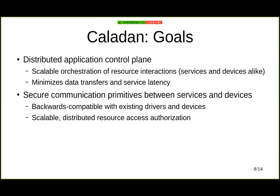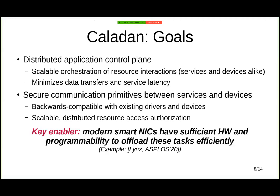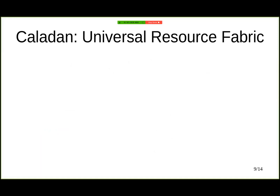The key enabler for Caladan is using modern SmartNICs, because they have sufficient hardware and programmability to efficiently offload system tasks into the SmartNICs and out of the CPUs. For example, there is recent work called Links, which precisely uses these SmartNICs to offer a remote interface to operate with GPUs across the network. The way Caladan solves these problems is by offering what we call a universal resource fabric.